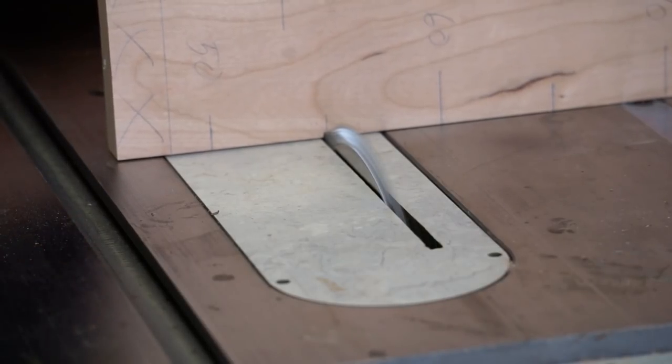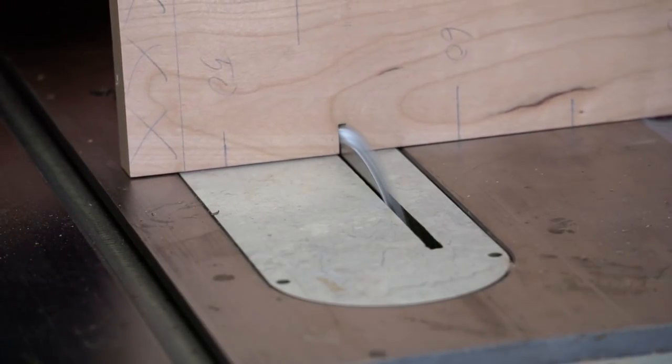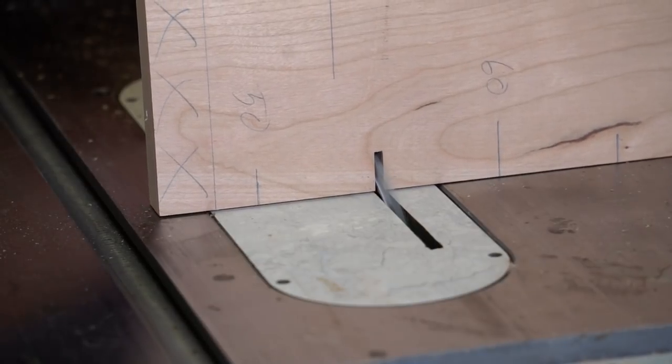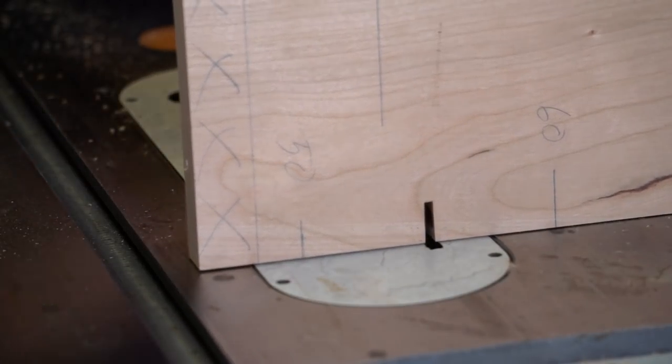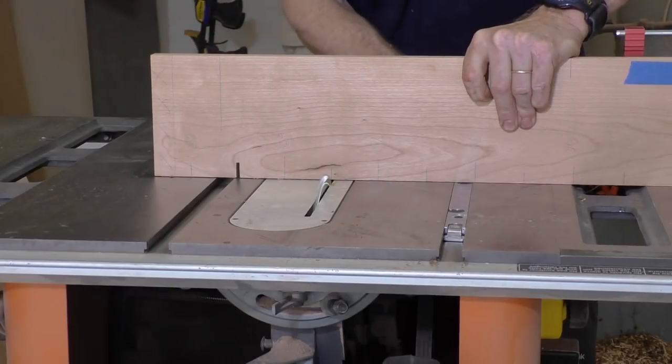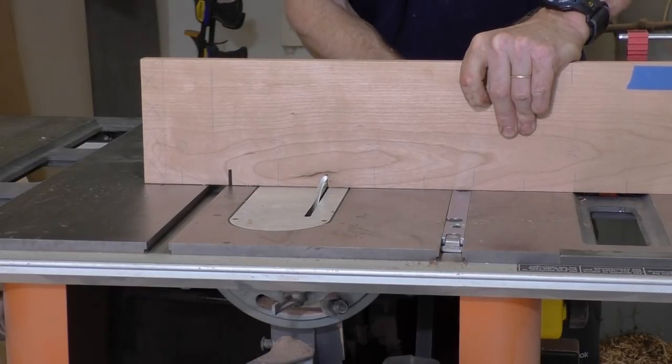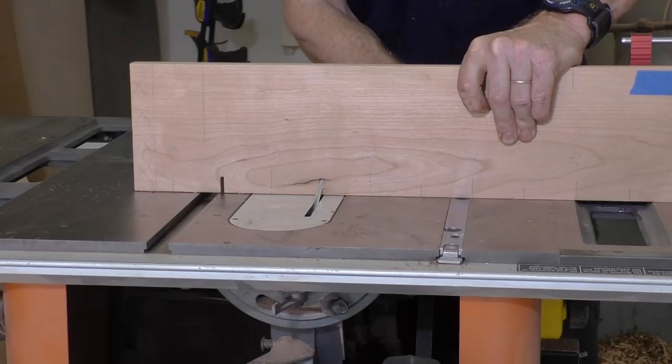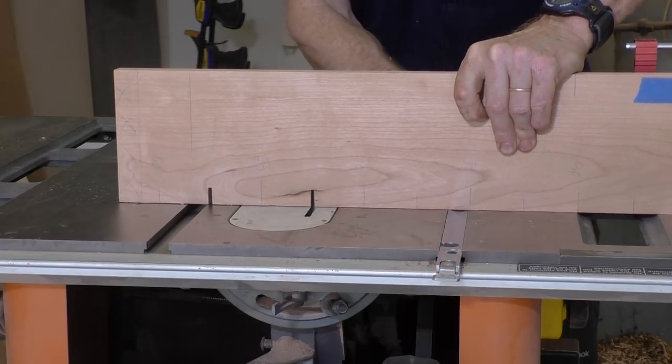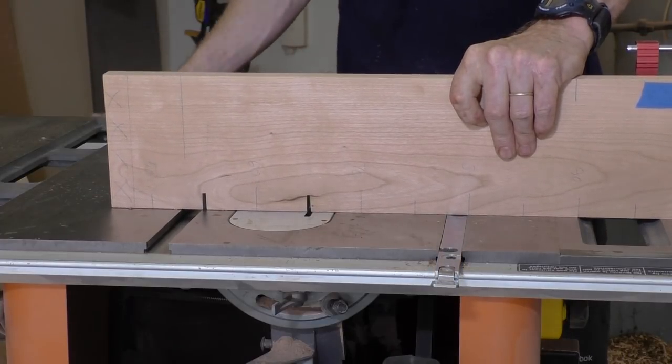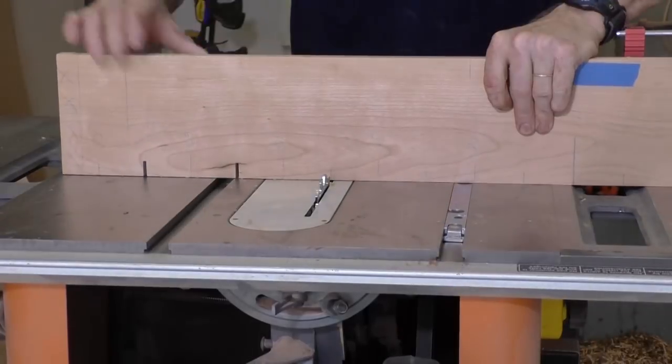And now for each of the increments that I've marked I'm using my dado set. It's the two outside dado blades to cut a quarter inch slot in each piece for each mark. For the minor increments that correspond to every inch or every five centimeters I'm cutting those to be three quarters of an inch high.